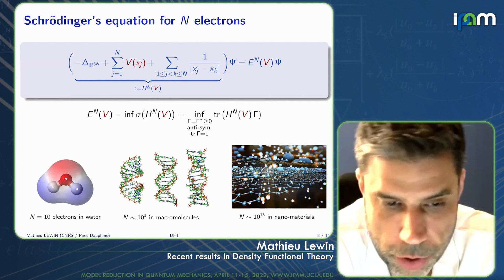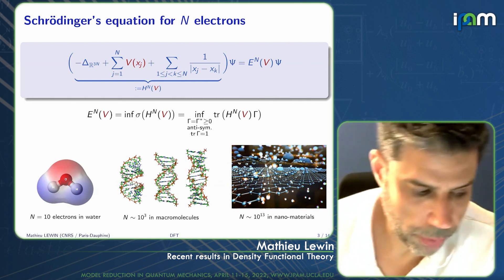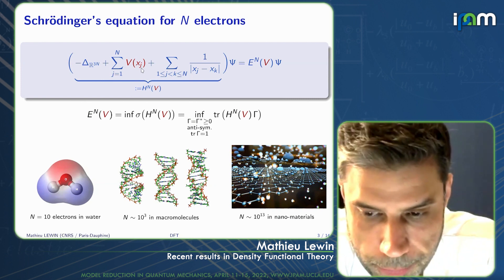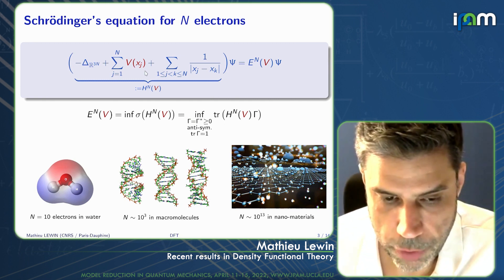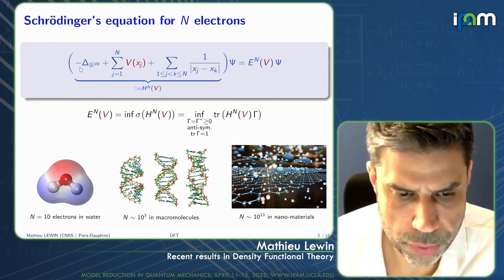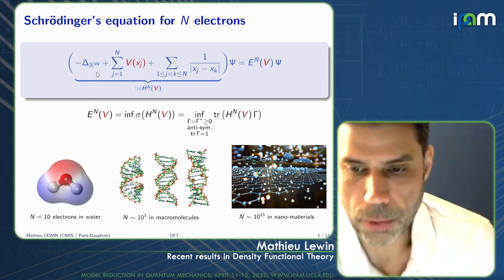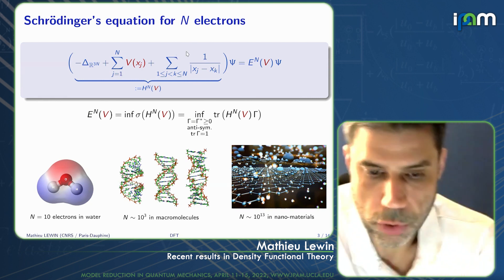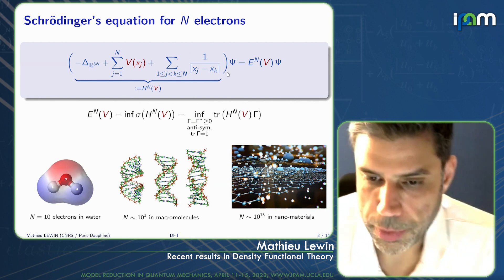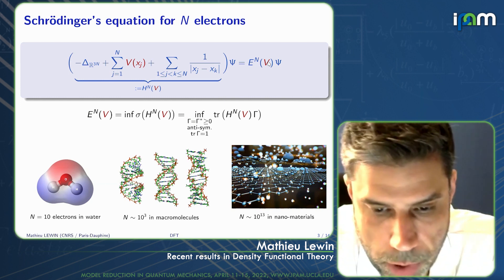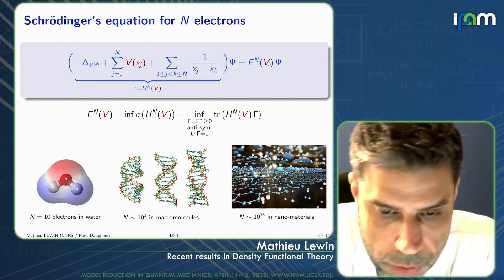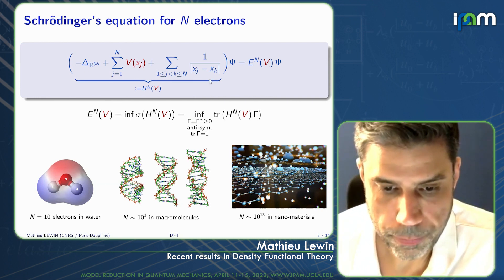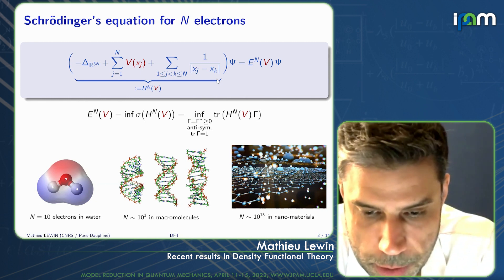We will start with the usual Schrödinger equation for N electrons. We consider N electrons in an external potential V, and V is going to be quite arbitrary. We have the usual Laplacian — I have not put the usual 1/2 here, so we work in units where the mass is 1/2 — and here is the usual Coulomb repulsion between the electrons. The wave function psi must be anti-symmetric, and in this talk I'm only going to discuss ground states. So E_N of V denotes the lowest eigenvalue, or the bottom of the spectrum of this N-body operator, in the anti-symmetric subspace because electrons are fermions.